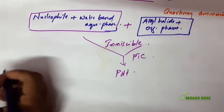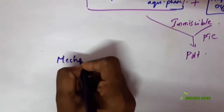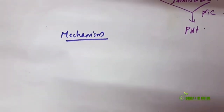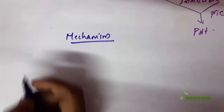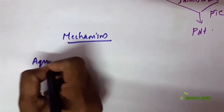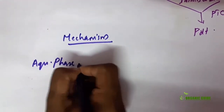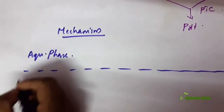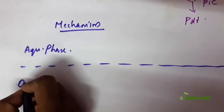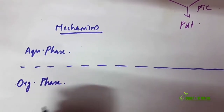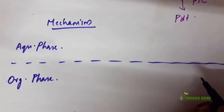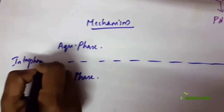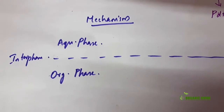Next we will move on to the mechanism — how this will happen. There are two phases: the aqueous phase and the organic phase. Between them is the interface, that is the boundary phase between the aqueous phase and the organic phase.